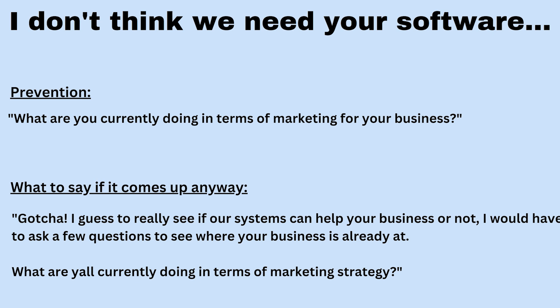Objection number seven is: I don't think we need your software. One way to prevent this is by simply asking at the beginning: what are you currently doing in terms of marketing for your business? This lets you understand what they're already doing. If they're already doing everything GoHighLevel does, they really don't need the software, but that's almost never the case. 99% of the time, these businesses aren't doing everything GoHighLevel can do for them. By asking upfront, you can cater the rest of the pitch to show only the features they're missing or the things that will help them most. If it comes up anyway, ask: what are y'all currently doing in terms of marketing strategy? — which reveals where the gaps are.